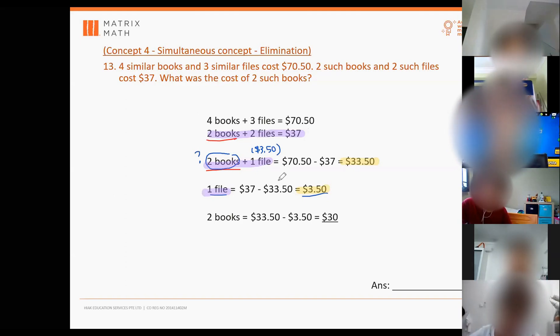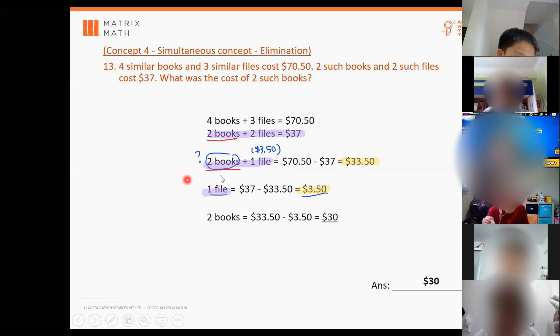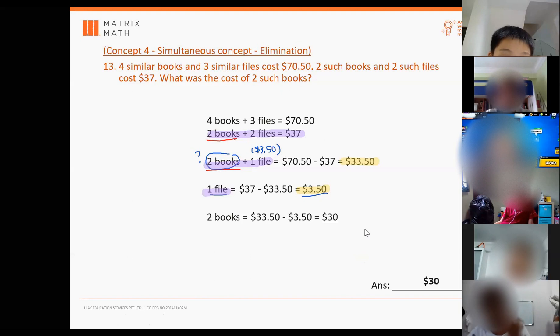Okay. Okay? So, the idea is this. We keep subtracting until we get rid of one of the items. It's either you get rid of the books or get rid of the files. Oh, okay? Okay. Okay, so, yeah, the answer will be $30. So, you see, you don't even have to find the cost of one book. Straight away, you found the cost of two books. That will be the answer. You don't have to go and what? 30 divided by 2. Don't need. Okay? Because the question wants the cost of two books. Okay.